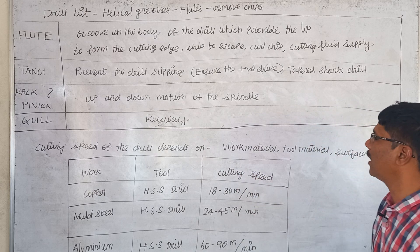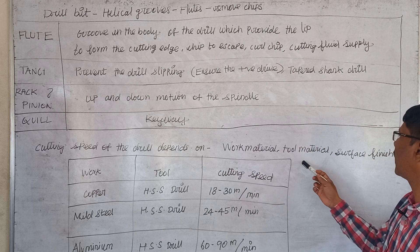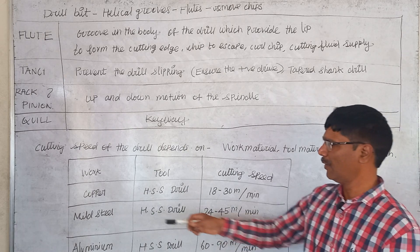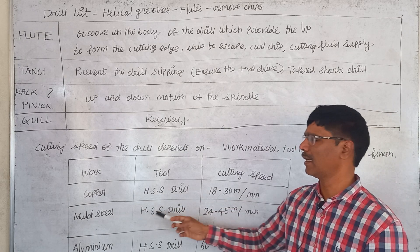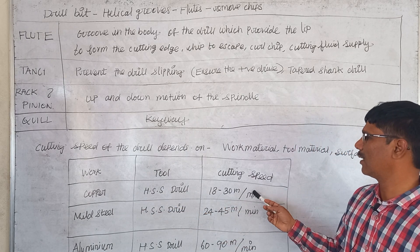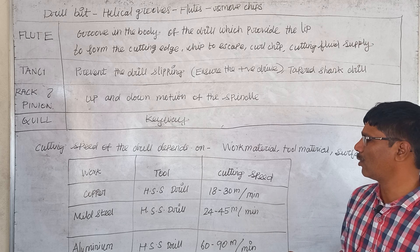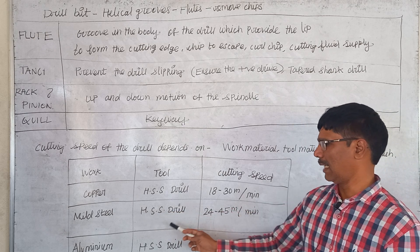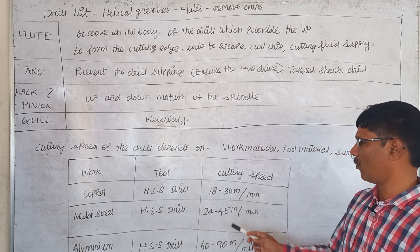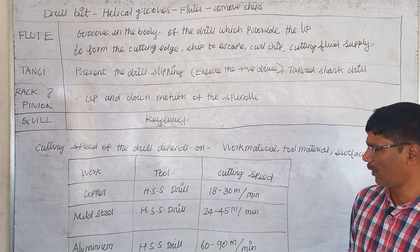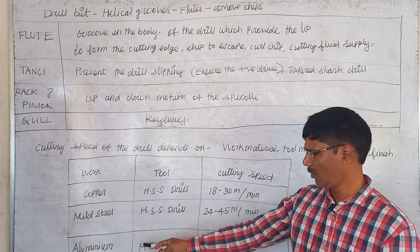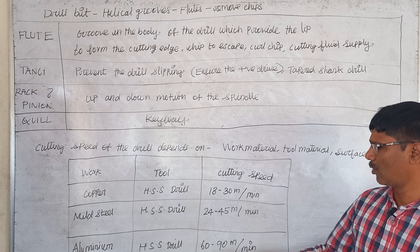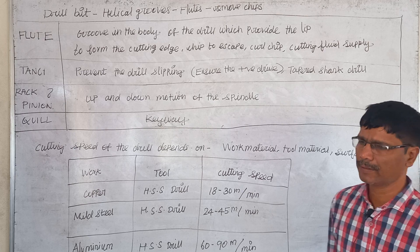The cutting speed of the drill depends on the work material, tool material, and surface finish. For copper with an HSS drill, the speed is 18 to 30 meters per minute. For mild steel with an HSS drill, it is 24 to 45 meters per minute. For aluminium with an HSS drill, it is 60 to 90 meters per minute.